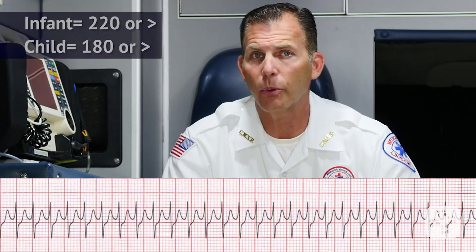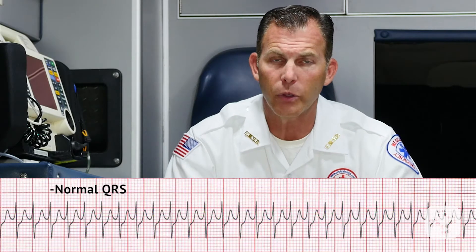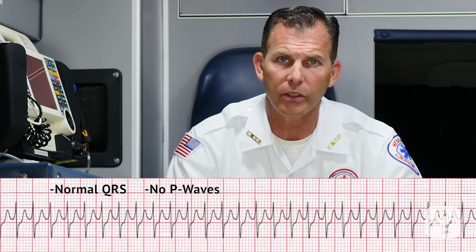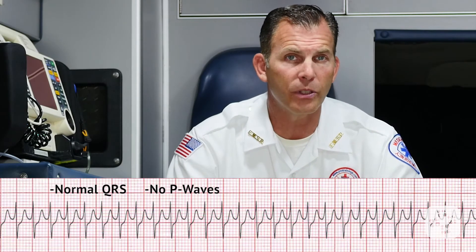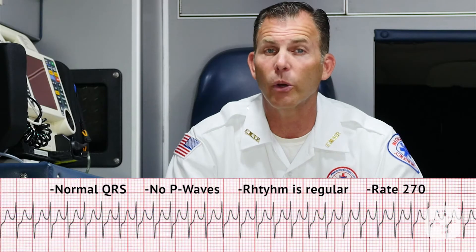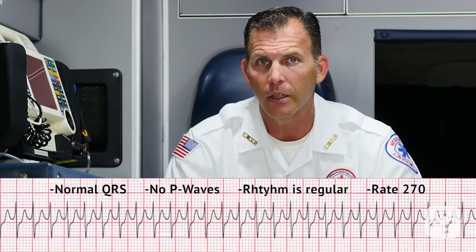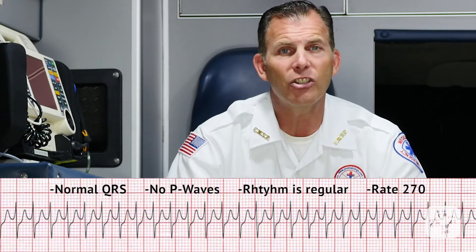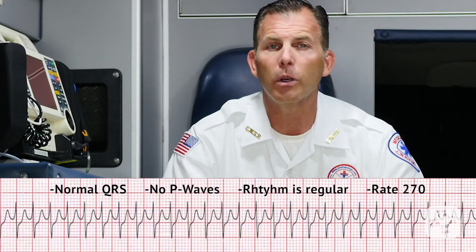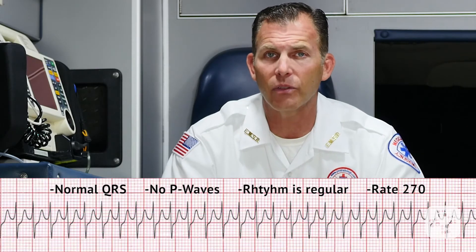In our example, the QRS is normal. No P waves are present and the rhythm is regular with a rate of 270 beats per minute. From the ECG alone, it would appear that our patient is in SVT.